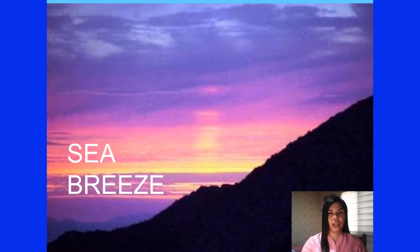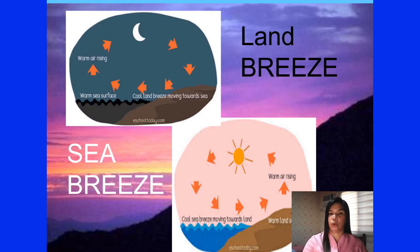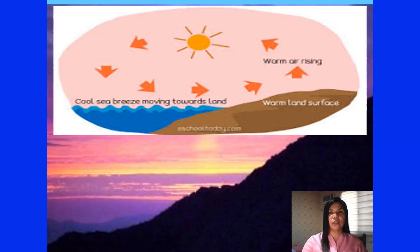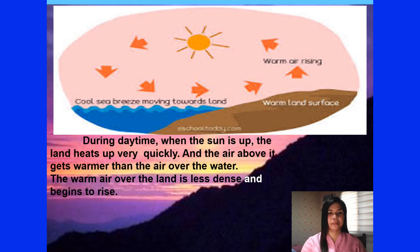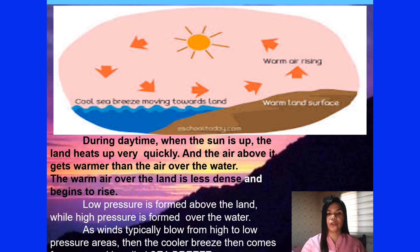As the name suggests, these two local wind systems occur along coastal areas, or areas which adjoin large bodies of water. Take a look closely at the diagram. During daytime, when the sun is up, the land heats up very quickly, and the air above it gets warmer than the air over the water. The warm air over the land is less dense and begins to rise. Low pressure is formed above the land, while higher pressure is formed above the water. As winds typically blow from high to low pressure areas, the cooler breeze then comes from the sea — that's called sea breeze.